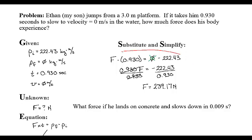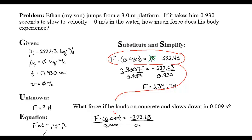I'm going to take this formula and replace one letter, one number. For force times 0.009 equals negative 222.43. In order to get force all by itself, I'll divide by 0.009. Cancel. Cancel. Cancel.